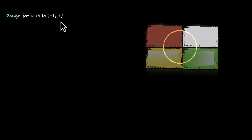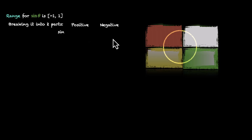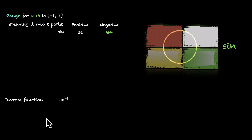Now let's apply these principles to get the domain and range for all six functions. We have a unit circle with four quadrants. Sine is positive in the second quadrant, cosine is positive in the fourth, tangent is positive in the third, and all of them are positive in the first quadrant. For sine: the range of sine theta is minus one to one. We split this into positive and negative parts, checking which quadrants work for each. For positive we picked the first quadrant, and for negative we picked the neighboring fourth quadrant. This gives the range for sine inverse. Domain for sine inverse is minus one to one, and the range is minus π/2 to π/2.